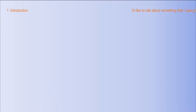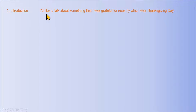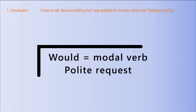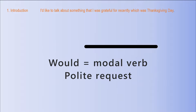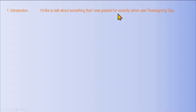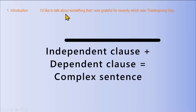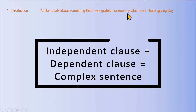Starting with the introduction: 'I'd like to talk about something that I was grateful for recently, which was Thanksgiving Day.' That's your first sentence. 'I would like to talk about' uses 'would' — an auxiliary modal verb that makes a polite request to discuss something in detail. We've also added a relative clause: 'which was Thanksgiving Day.' This demonstrates complex grammatical structure — combining an independent clause with a dependent clause.